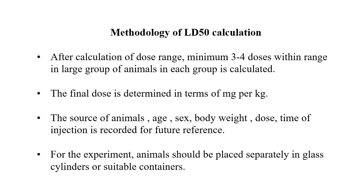After calculation of the dose range, a minimum of 3 to 4 doses within the range are tested in large groups of animals. The final dose is determined in terms of mg/kg. The source of animal, sex, age, body weight, dose, and time of injection are all recorded for further reference.